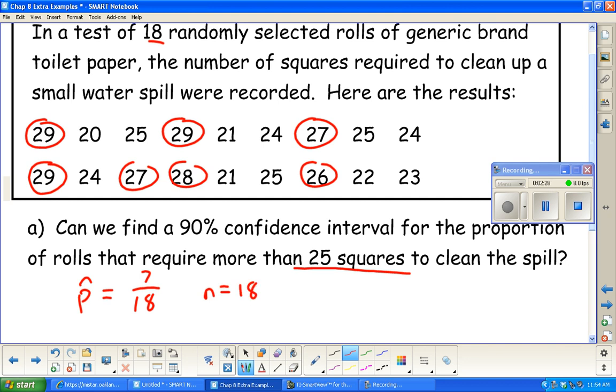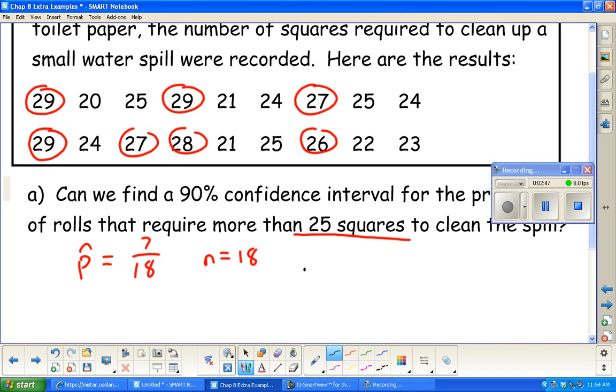We have an estimate here. We can use a P hat of 7 out of 18. I'm going to leave it as a fraction because I think it's going to be a decimal that goes on forever that I don't want around. Let's see if we can figure out some conditions, see if they're met. We know N is 18. Our three conditions: we need a random sample, and I think that one was given to us.